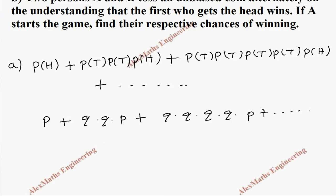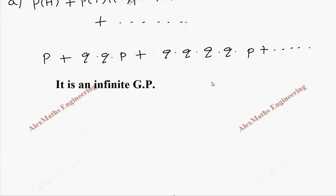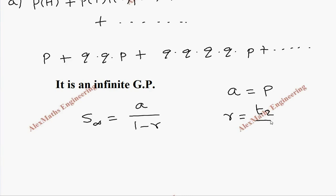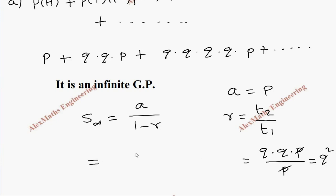For an infinite GP, the formula is S∞ = a / (1 − r), where a is the first term. From the series, a = P, and r is the second term divided by the first term: (Q·Q·P) / P, which after cancelling gives Q². So the sum is P / (1 − Q²).